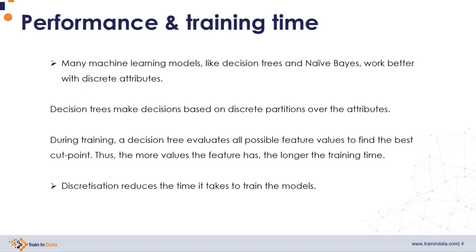Discretization, performance, and training time: some machine learning models, like decision trees and naive Bayes, work better with discrete attributes. Focusing on decision trees, which are probably the algorithms you are most familiar with, they make decisions based on discrete partitions over the variables.